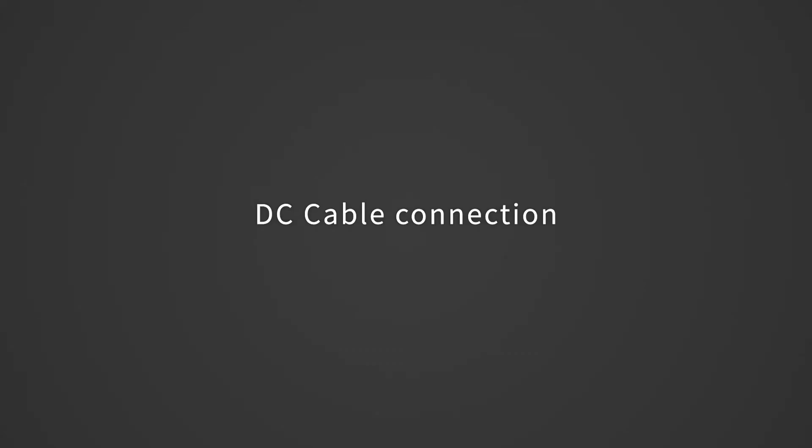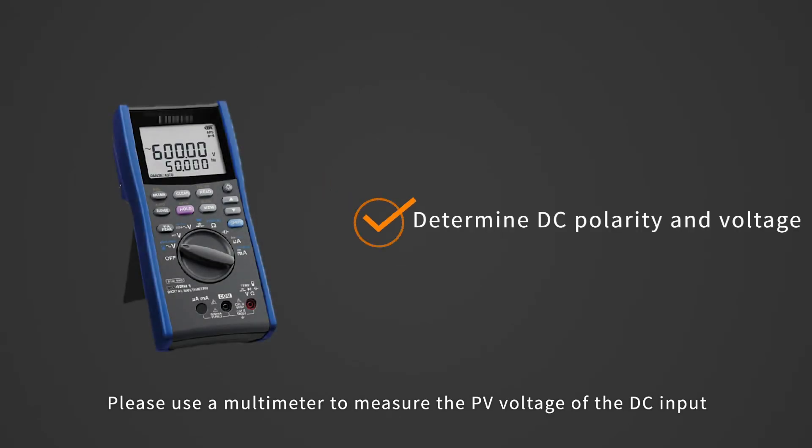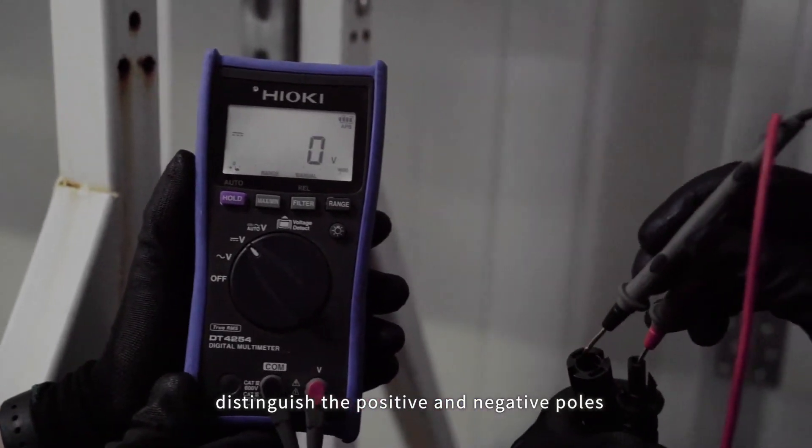DC cable connection. Please use a multimeter to measure the PV voltage of the DC input. Distinguish the positive and negative poles.